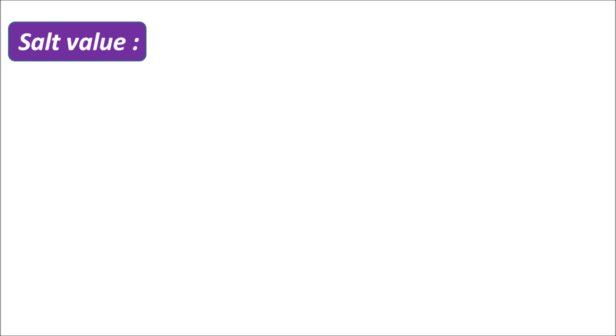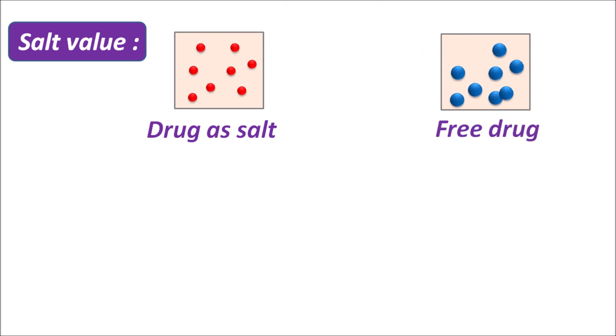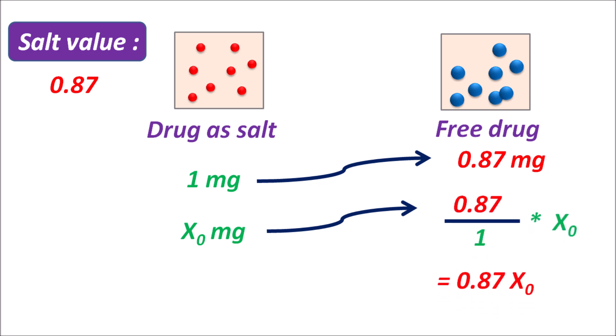The salt value: suppose a tablet contains the drug in salt form. From this salt form, the drug is released slowly as free drug. We must consider the free drug concentration to calculate steady state plasma concentration. The dose in salt form is not equivalent to the dose in free form, so a correction is required using the salt value. Salt value is 0.87, meaning 1 mg of the salt is equivalent to 0.87 mg of the free drug. So if X0 mg of dose is given, it is equivalent to 0.87 × X0 mg of the free drug.